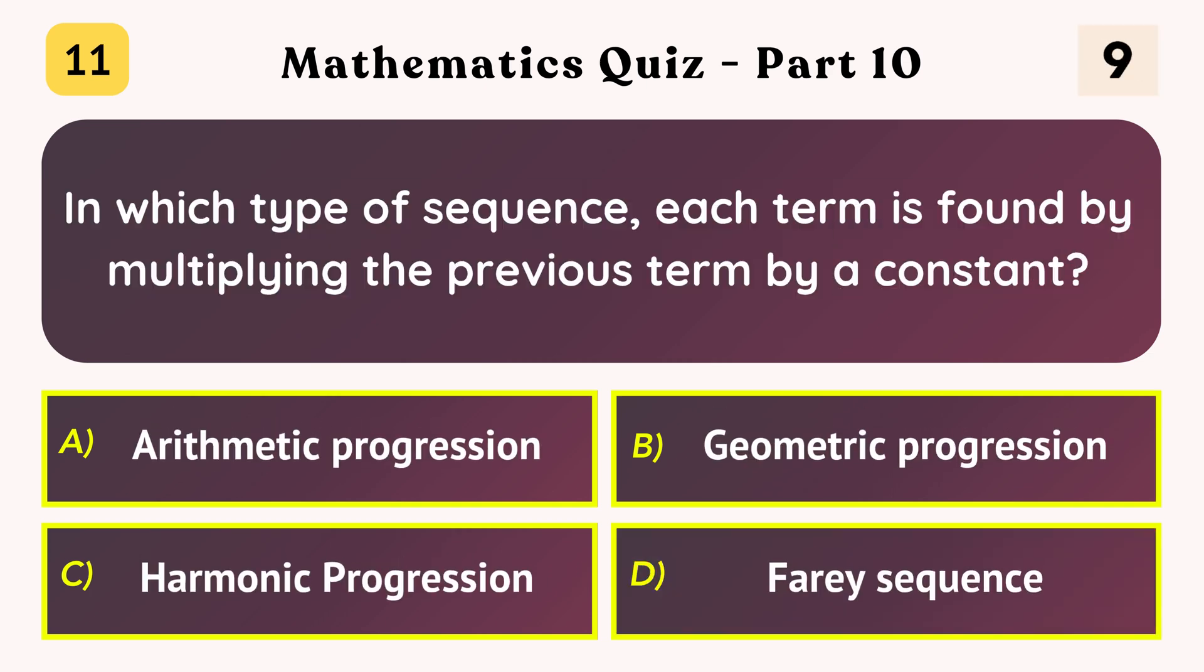In which type of sequence each term is found by multiplying the previous term by a constant? Geometric progression.